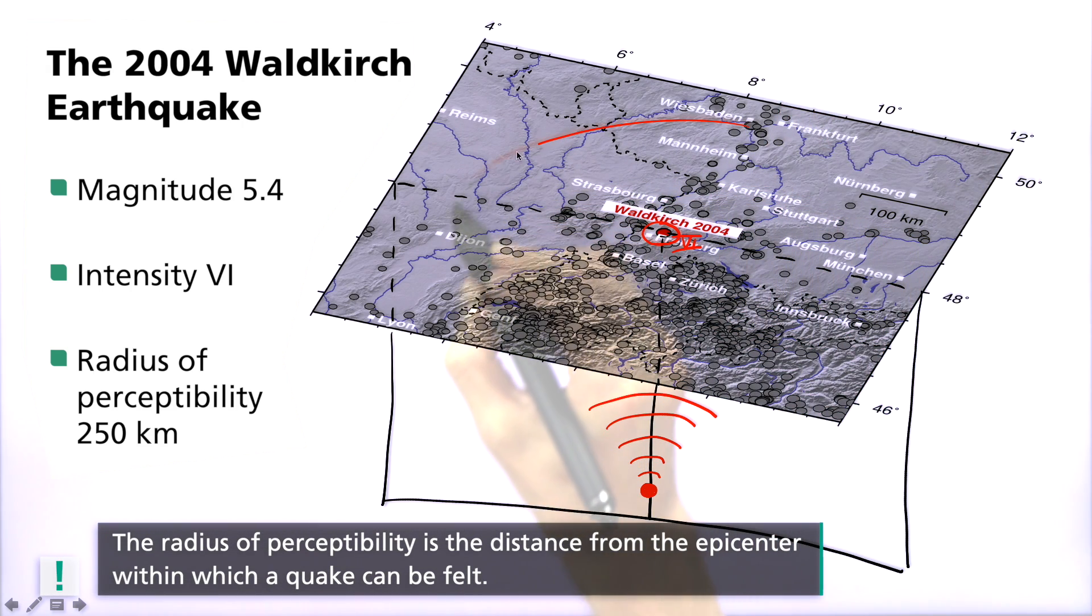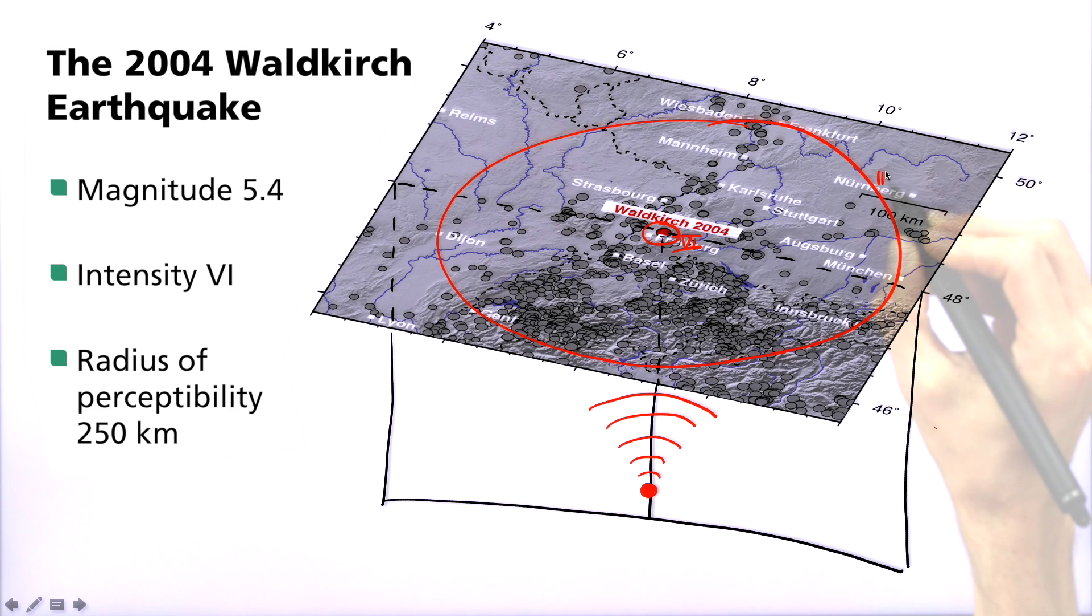The radius of perceptibility corresponds to the average distance from the epicenter within which the quake can be felt by humans and corresponds to an intensity of 3. You can certainly imagine that, in this case, the maximum intensity depends on both the magnitude, that means the force on the ground, as well as the depth of the earthquake. Deep earthquakes are less strongly felt on the earth's surface than shallow quakes of the same magnitude.